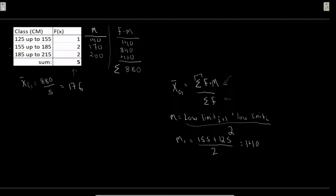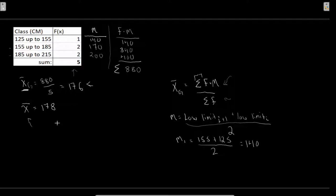If you want to compare this - looking back at our last video - when we had all the raw data we calculated a mean of 178. So we see that our grouped mean is not an exact estimate, and we're dealing with very limited data points here. But it's not too terrible - it gives us the idea as to where the mean would be. Keep in mind: the grouped mean is our estimate, while 178 was calculated from the full dataset.